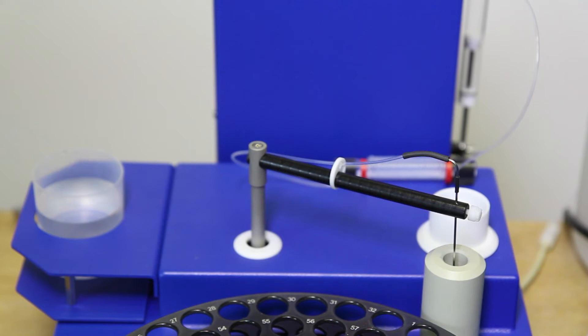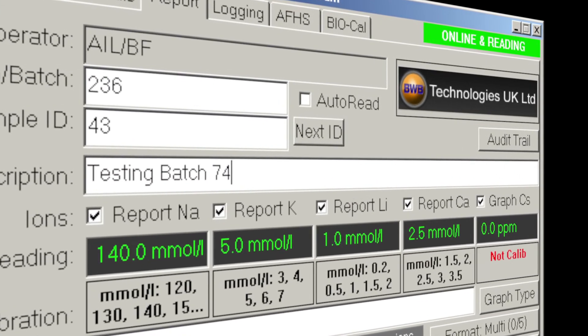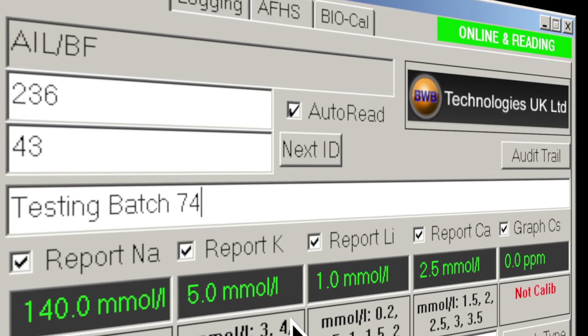Each result will be printed, if the printer is on, and sent to the FPPC software. These can be captured in the report tab by checking the auto-read checkbox.